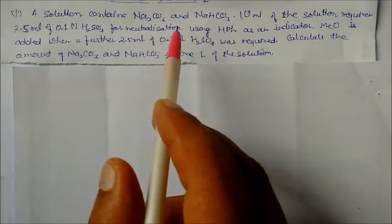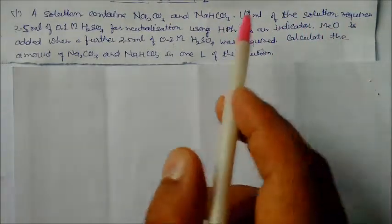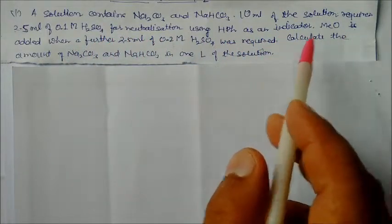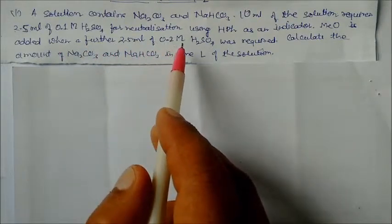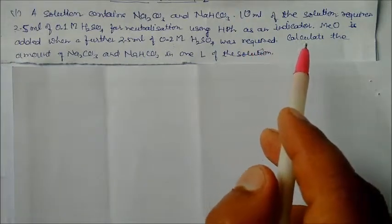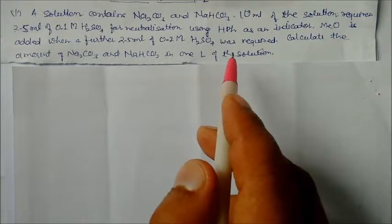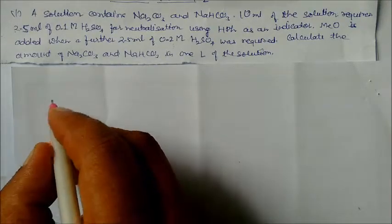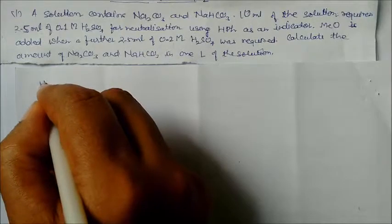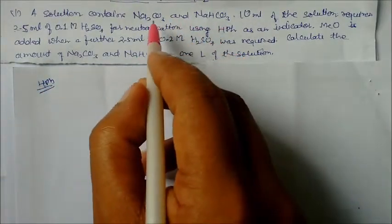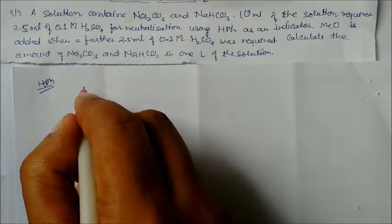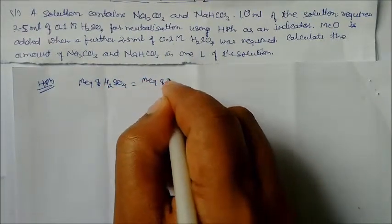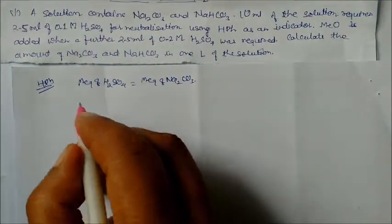Next problem: a solution contains sodium carbonate and sodium bicarbonate. 10 ml of this solution requires 2.5 ml of 0.1 M H₂SO₄ for neutralization using phenolphthalein indicator. Then methyl orange is added and a further 2.5 ml of 0.2 M H₂SO₄ is required. Calculate the amount of Na₂CO₃ and NaHCO₃ per liter of solution. With phenolphthalein, Na₂CO₃ is half-neutralized, so: milliequivalents of H₂SO₄ = milliequivalents of Na₂CO₃.